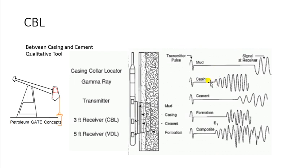Since the speed of sound is greater in the casing than in the formation or in the mud, the first signals which are received at the receiver are those which travel through the casing.